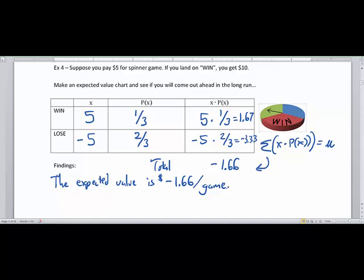So this is the theoretical average. You would lose $1.66 per game. So the gambler would want to play this game and hopefully win the $10 bill after paying $5, and then hopefully stop playing while they're ahead. But this game is definitely skewed in favor of the casino or whoever is running this little spinner game, because the person who's playing is at a disadvantage, at $1.66 per game.